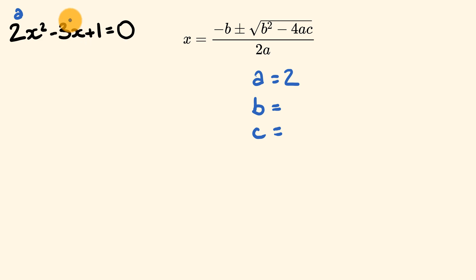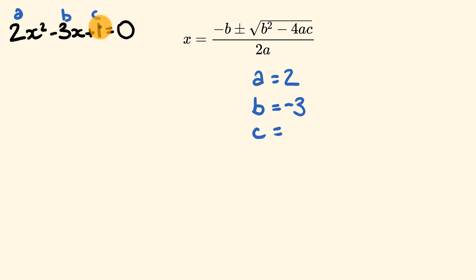The value in front of x is the value of b, so b is equal to negative 3. Finally, we have the value of c, which is 1. So now what we do is go through and put these into the quadratic formula.